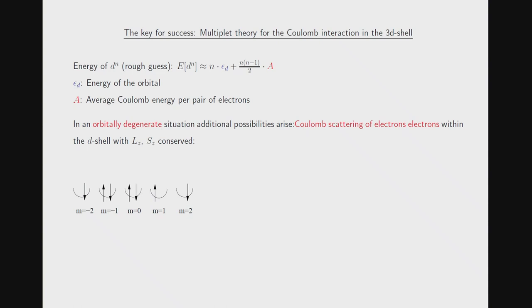So how does this method work? Since the problem is with the Coulomb interaction, we have to find a more sophisticated way of treating it. If you were asked to guess the energy of d^n, you would come up with n times the orbital energy plus the number of electron pairs times the average Coulomb interaction per electron pair. But in a multi-orbital situation, additional possibilities arise: two electrons in the 5d orbitals can scatter from each other via the Coulomb interaction and be transferred to different orbitals — Coulomb scattering within the D shell.